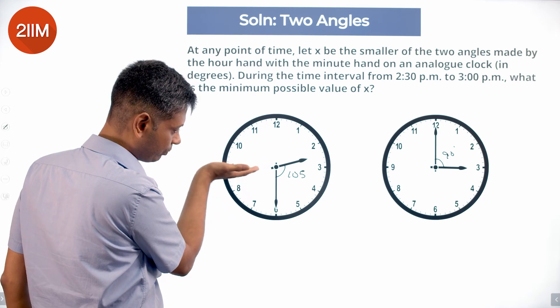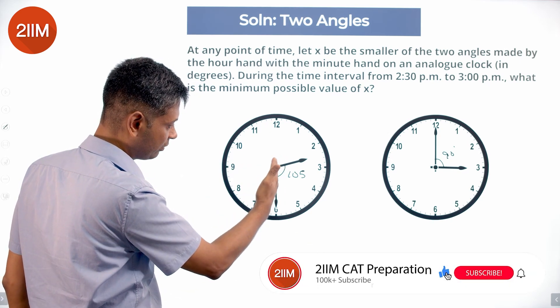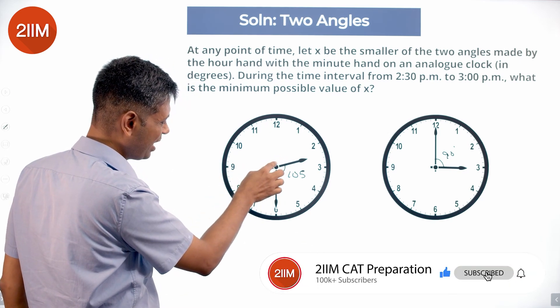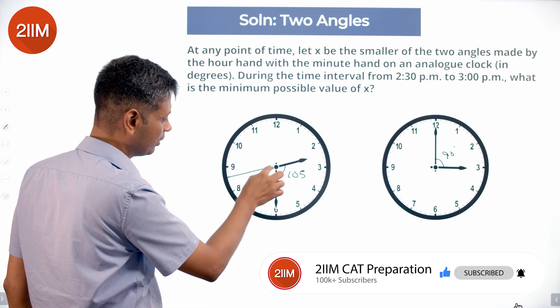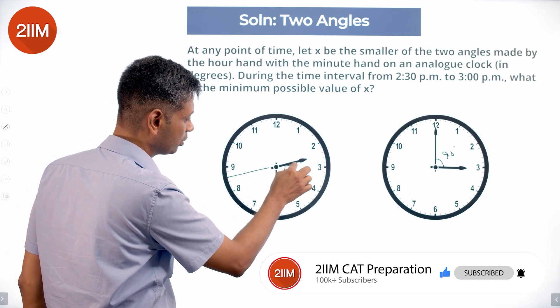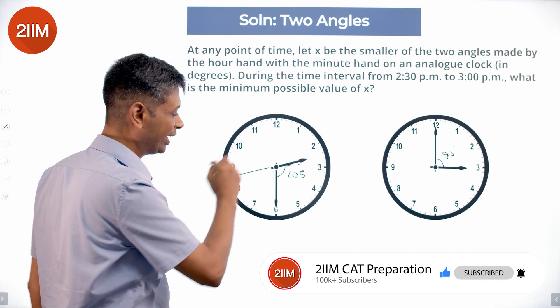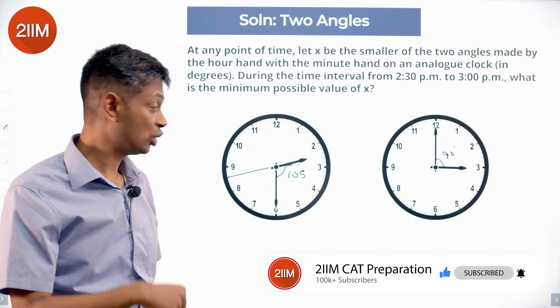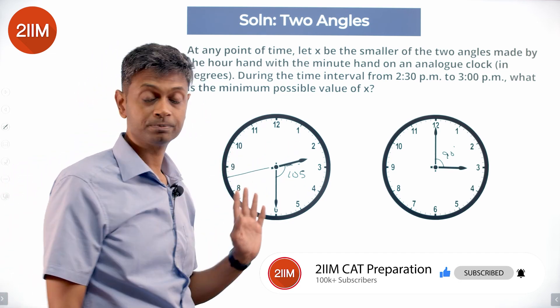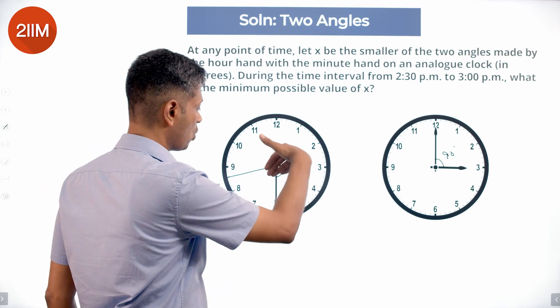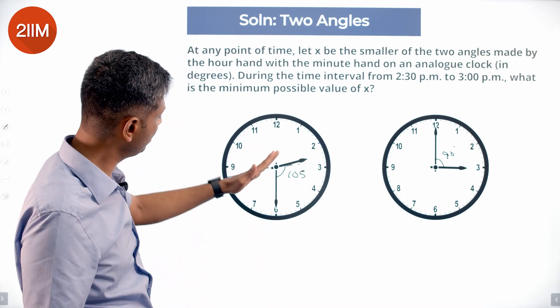This will keep on increasing, right? So it will be 105, 110, 120, and somewhere here where this has moved a little bit to this point, it will become 180 degrees, after which the smaller angle will be on this side. So it will go from 105, it will keep on increasing to 180.